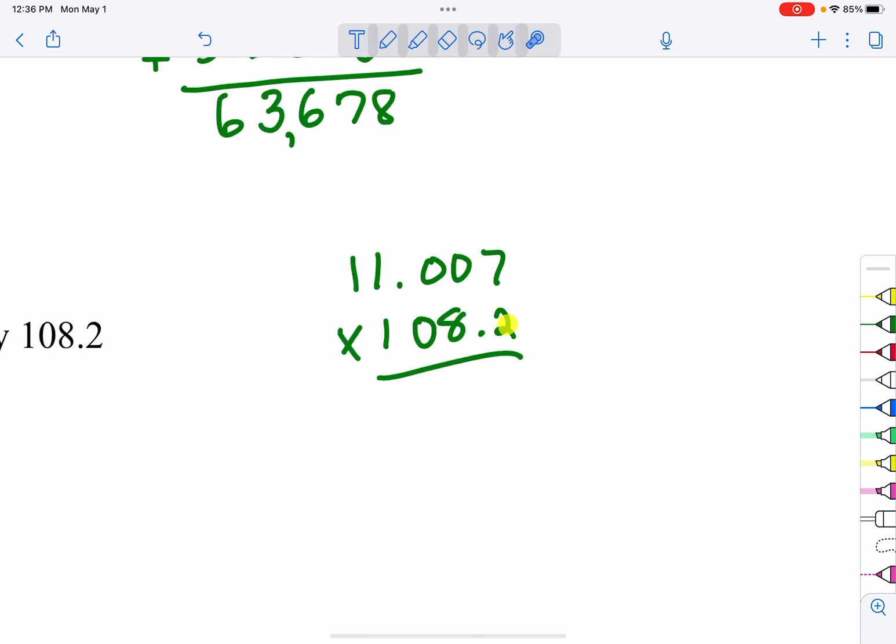First, we're going to use the 2. We're going to multiply it. 2 times 7 is 14, put down the 4, carry the 1. 2 times 0 is 0, plus 1 is 1. 2 times 0 is 0. 2 times 1 is 2. 2 times 1 is 2. We're done with the 2. Now we're moving on to the 8, but it's in the second spot, so we need a 0. And then we start. 8 times 7 is 56, we're going to put down the 6, carry a 5. 8 times 0 is 0, plus 5 is 5. 8 times 0 is 0. 8 times 1 is 8. 8 times 1 is 8.